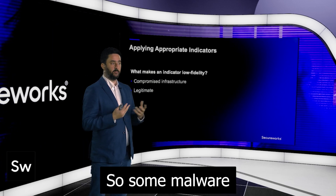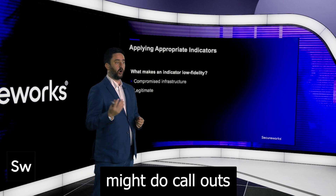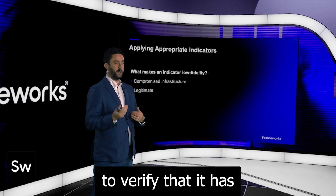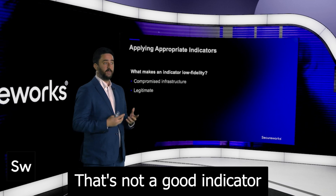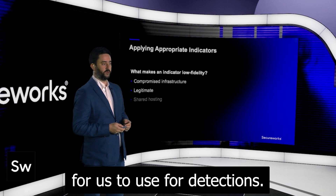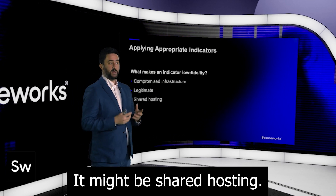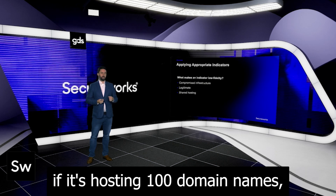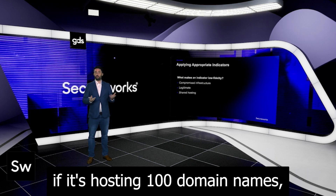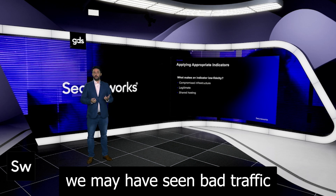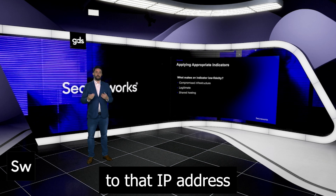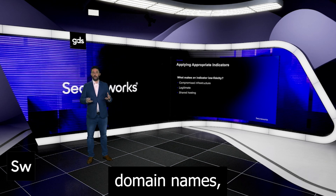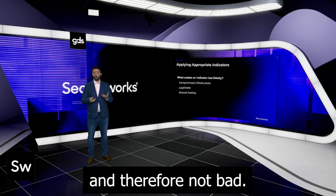It might be a legitimate thing — some malware might do call-outs to Google.com, for example, to verify that it has internet connectivity. That's not a good indicator for us to use for detections. It might also be shared hosting: if an IP address is hosting 100 domain names, we may have seen bad traffic to one of those domain names, but the chances are that traffic to that IP address could be to 99 of the 100 domain names and therefore not bad.